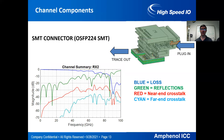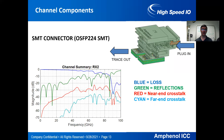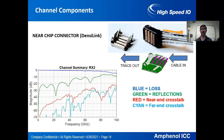The surface mount connector has a standard mating interface on the plug side, going through a right-angle structure to attach to the board. The crosstalk is similar to the overpass but slightly higher for the surface mount structure because it's electrically longer — a little more distance for the crosstalk to build up.